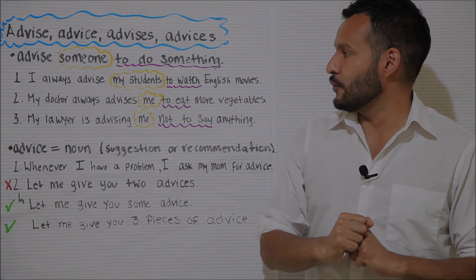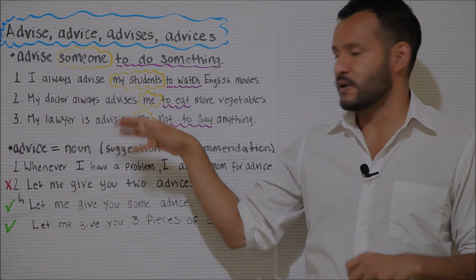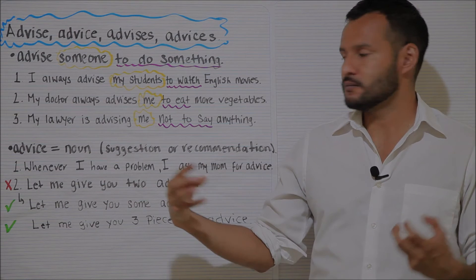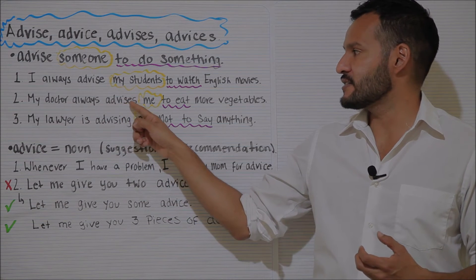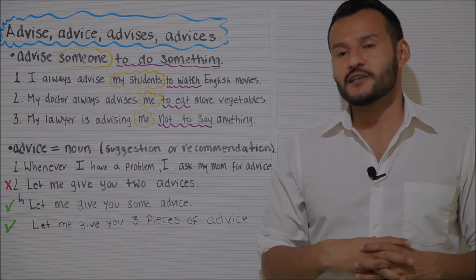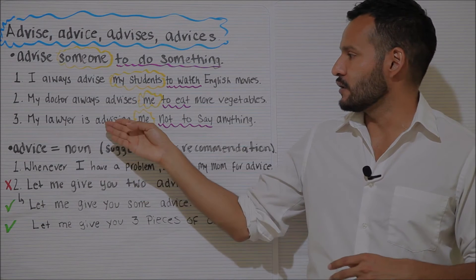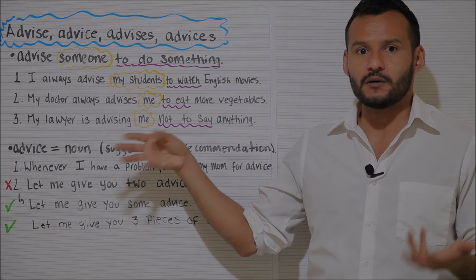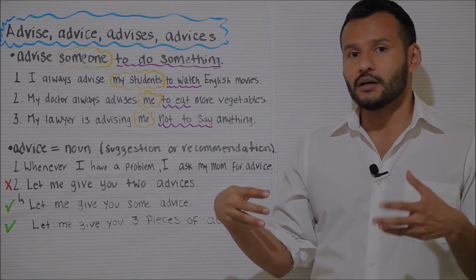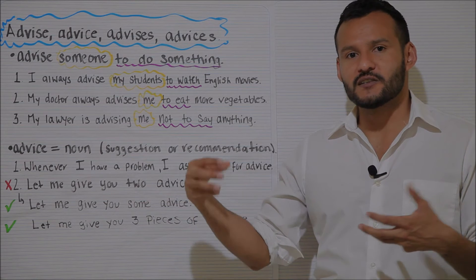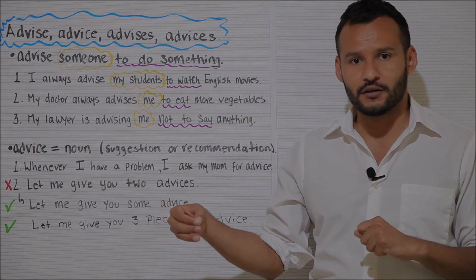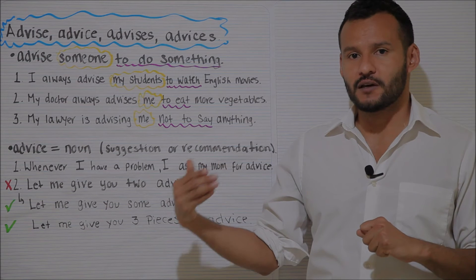For example: my doctor always advises me to eat more vegetables. Again, 'advises' — A-D-V-I-S-E-S. And in a present continuous example, imagine that I am having a legal problem at the moment — my lawyer is advising me not to say anything. She is advising me to stay quiet.